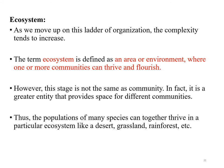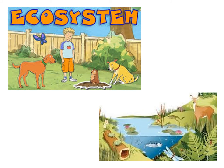As we move up this ladder of organization, the complexity tends to increase. The term ecosystem is defined as an area or environment where one or more communities can grow and flourish. However, it is not the same as a community — it is a greater entity that provides space for different communities, and thus the populations of many species can live together in a particular ecosystem, such as desert, grassland, or forest.